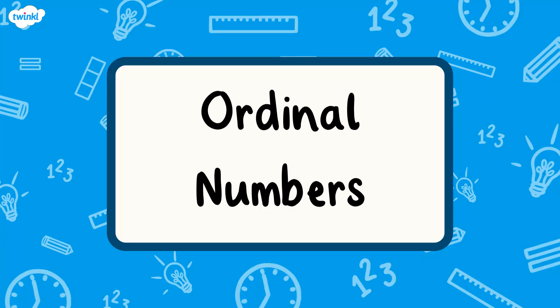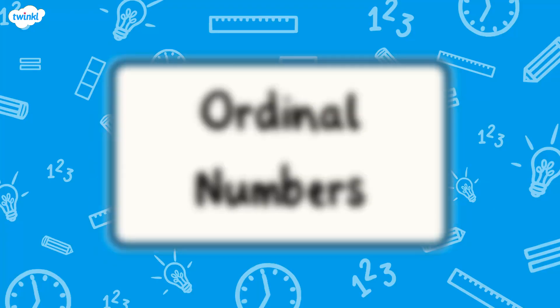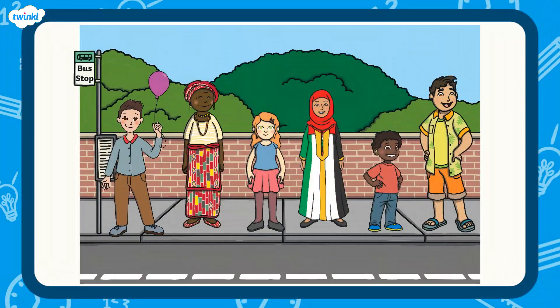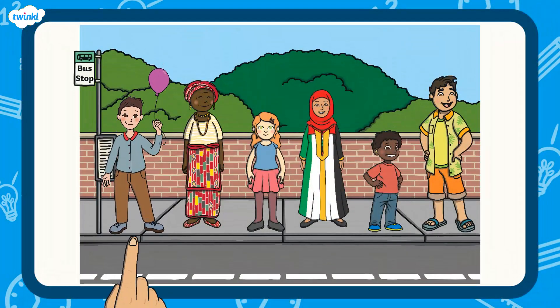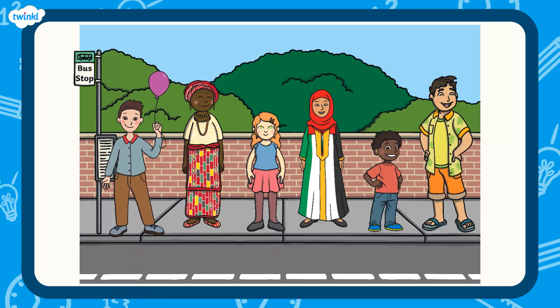They are used to describe the position of an object in an order. Here you can see people queuing for the bus. This man is at the front of the queue. He is in position 1, so he is first.